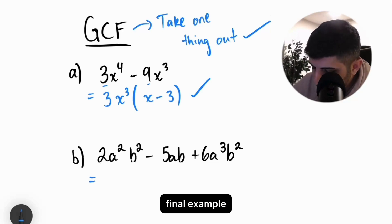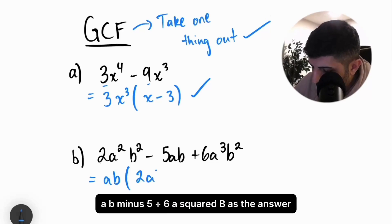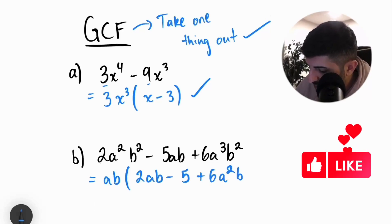Beautiful. Now, final example, I can take out ab, and I'll get 2ab minus 5 plus 6a squared b as the answer.